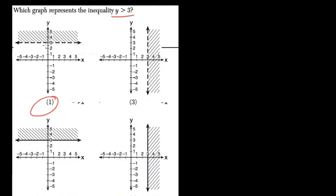The line is dotted because it's not greater than or equal to. That would be this one right here, y ≥ 3.